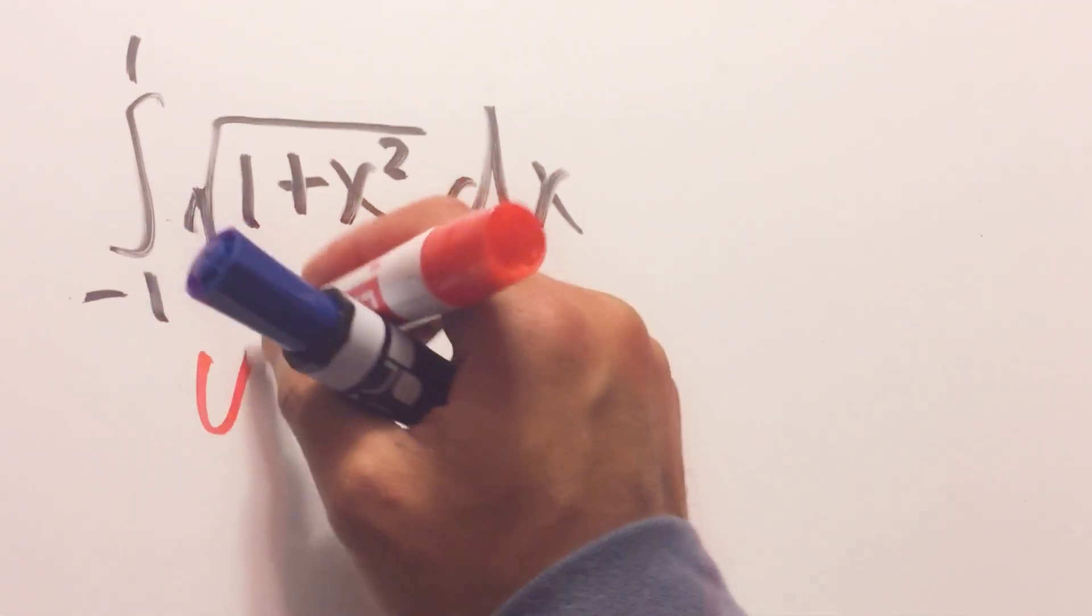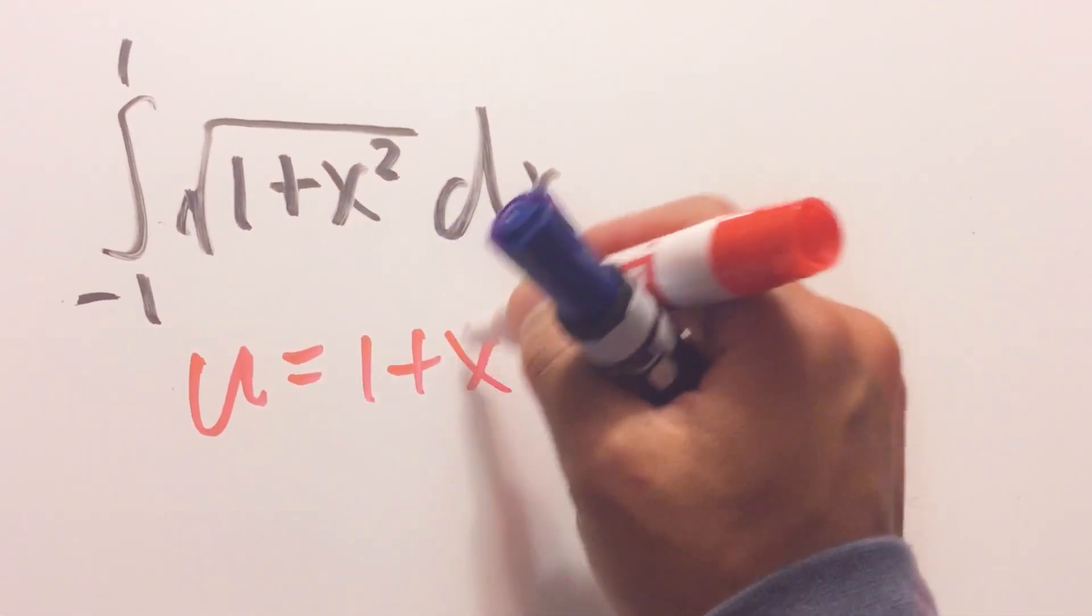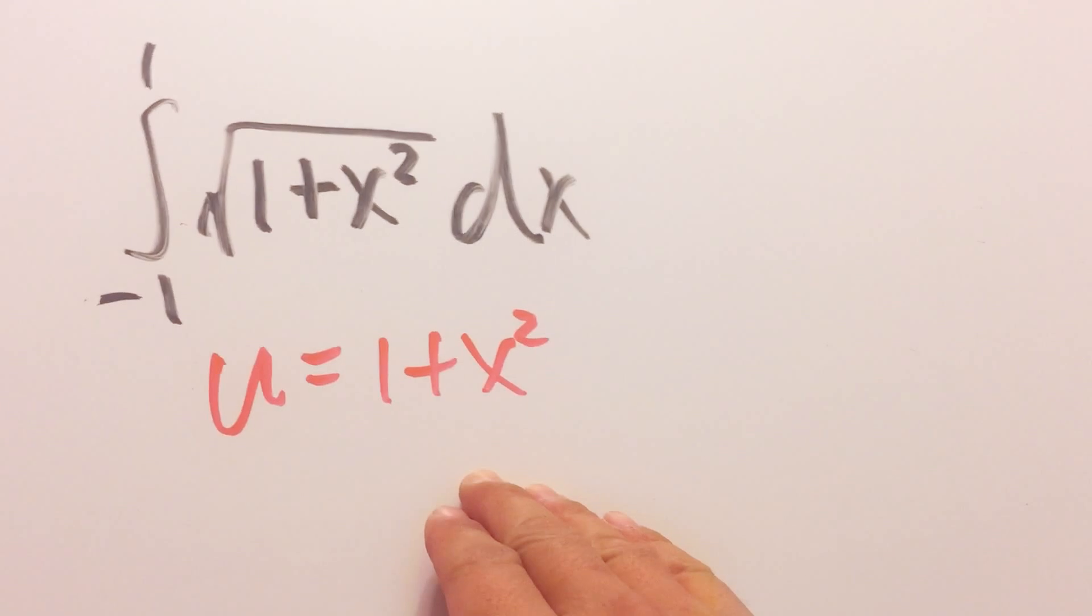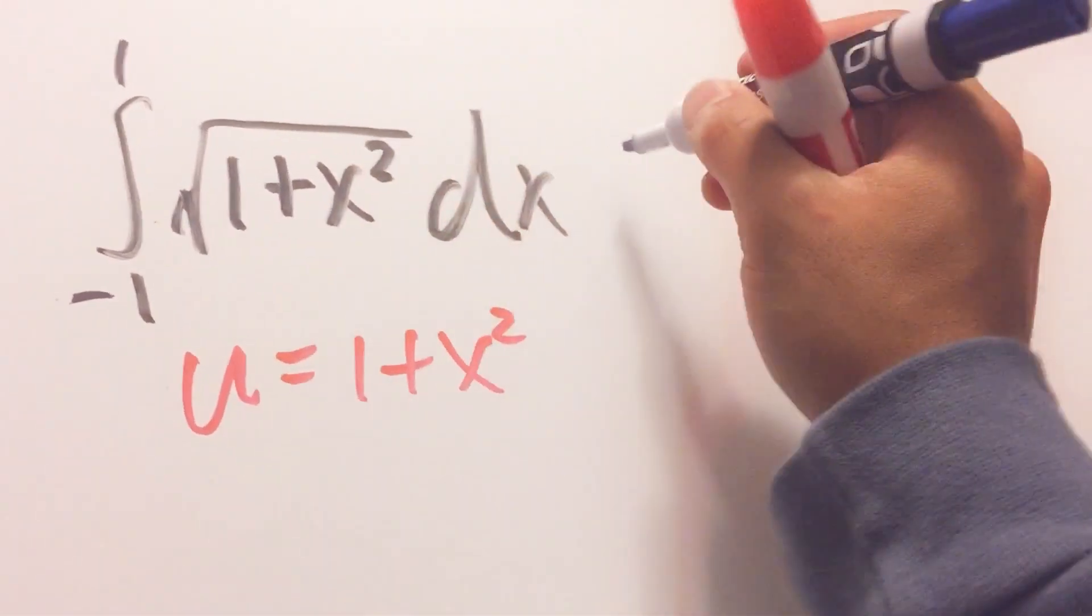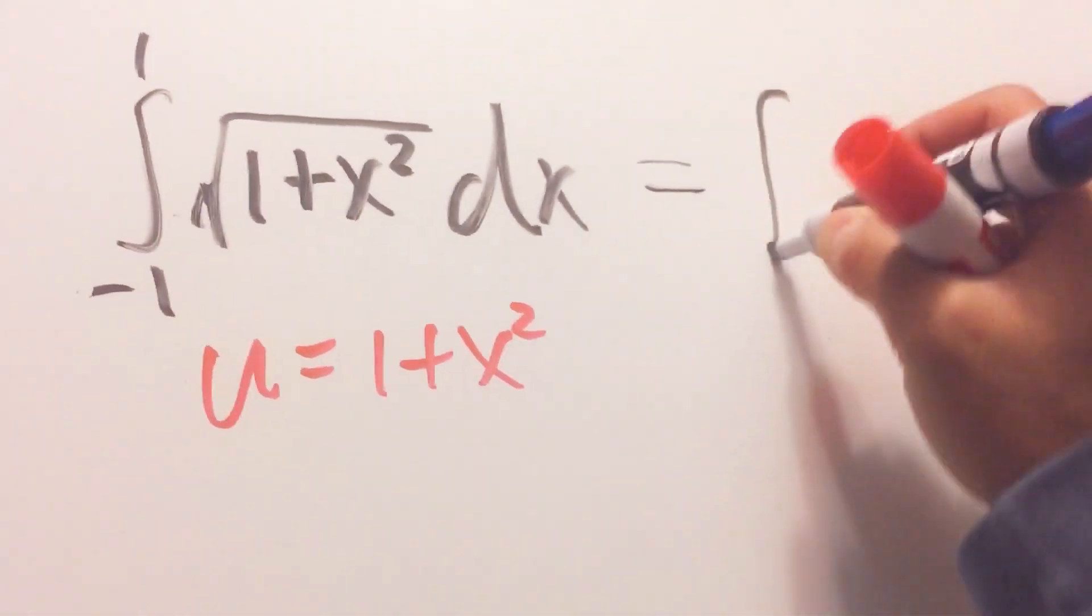I will do u substitution that u equals 1 plus x squared and let me just leave this as is right and I'll take this integral from the x world to the u world so the integral sign stays the same.